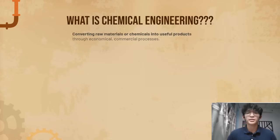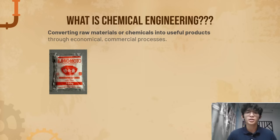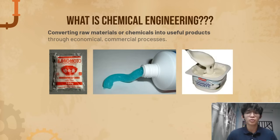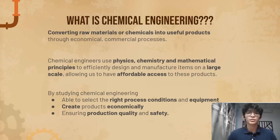What is chemical engineering? A chemical engineer is a person who is converting raw materials or chemicals into useful products. For instance, Ajinomoto, toothpaste, and also yogurt. We are the person who uses physics, chemistry, and mathematical principles to efficiently design and manufacture items on large scale, allowing all people to have affordable access to these products.